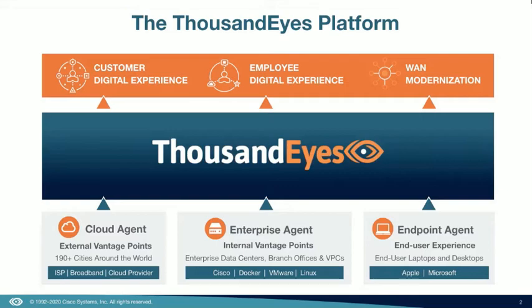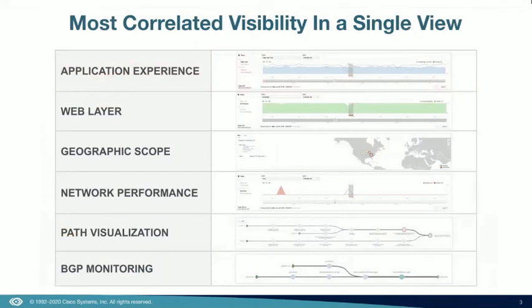The ThousandEyes solution provides unique visibility across the entire stack, starting with application experience — whether you're doing a transaction, a page load, or an HTTP query — understanding what the user's experience is as they access the service. This extends across the entire stack supporting service delivery, starting with the web tier and making sure the web layer is available from a geographic perspective, identifying if users in a specific part of the country or world are having an issue that may not be impacting everybody but is impacting a subset of your user population.